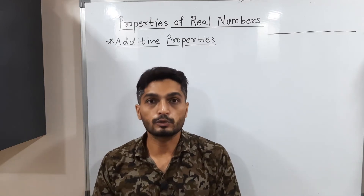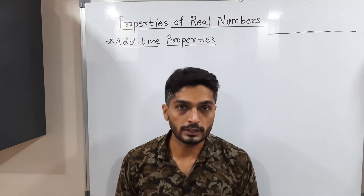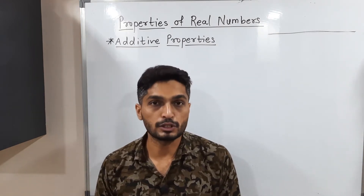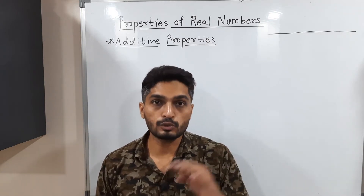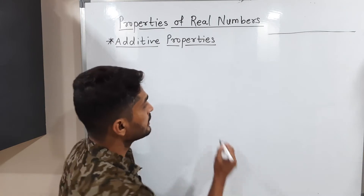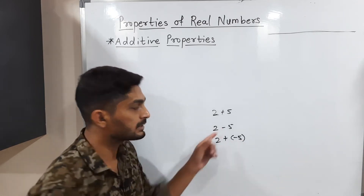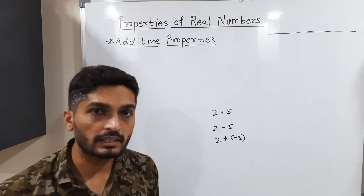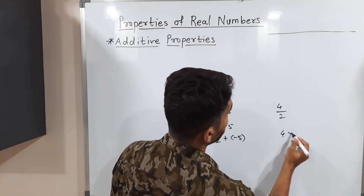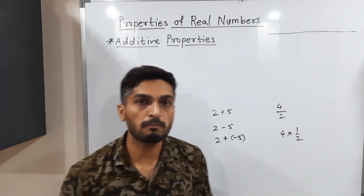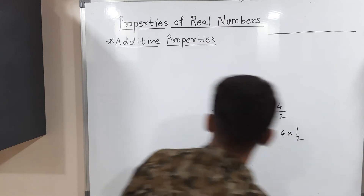We will discuss additive properties first. There are two main operations in real numbers: addition and multiplication. Subtraction can be expressed in the form of addition — for example, 2 minus 5 can be written as 2 plus (minus 5). Division can also be expressed in the form of multiplication — for example, 4 divided by 2 is the same as 4 into (1/2). So we consider only these two main operations.